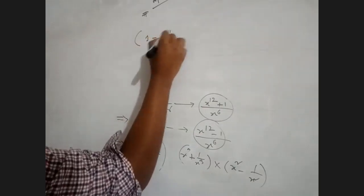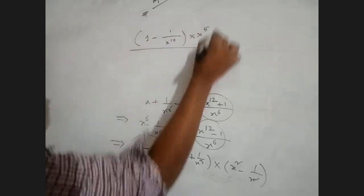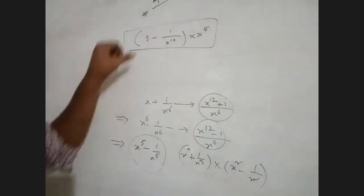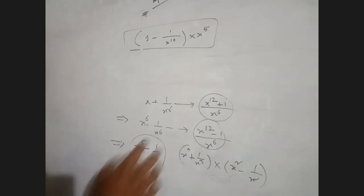1 minus 1 divided by x to the power of 10 into x to the power of 5. You know, this one is the same one. Therefore, 1 minus 1 divided by x to the power of 10 into x to the power of 5.